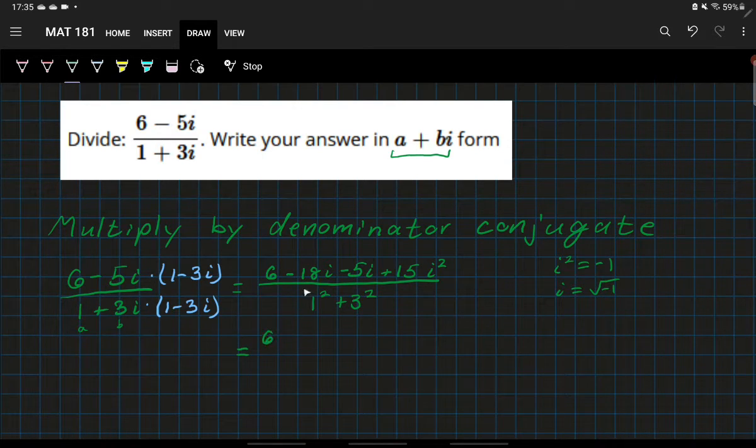So we have six, we have negative 18i minus five i which is negative 23i, plus 15 times negative one. All divided by one squared plus three squared, that's one plus nine, which is 10.